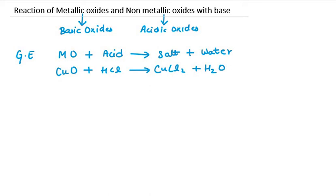Now there is a very important question. When we have copper oxide, copper oxide is actually of reddish color. When we react it with HCl, it gets converted into a blue-green color solution. So if you know that the color has changed from reddish to blue-green, this is a very important observation that is often repeated in exams.